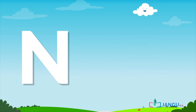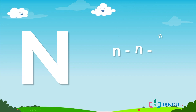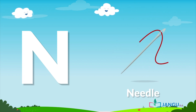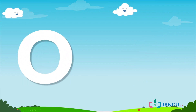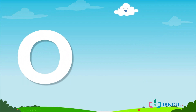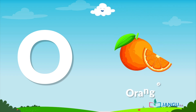N is pronounced as 'N' — N, N, N, N. Say after me: N, N, N, N. As in needle. O is pronounced as 'O' — O, O, O. Say after me: O, O, O. As in orange.